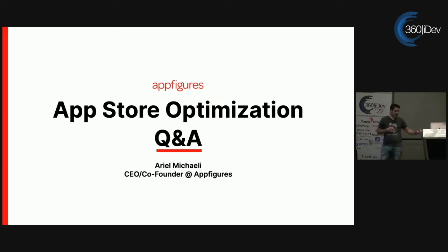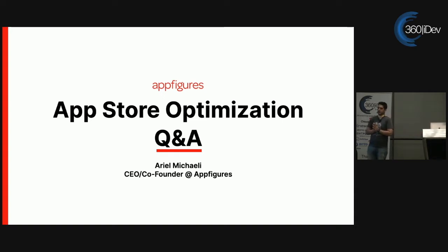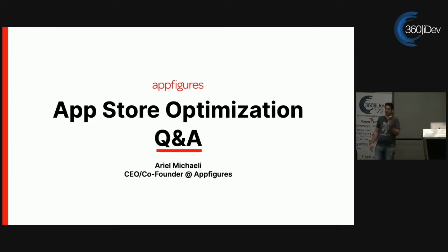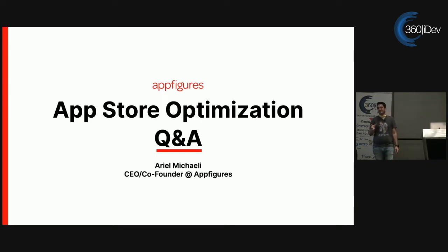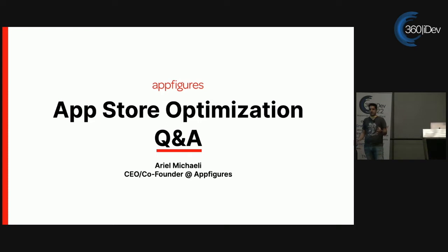For small indie developers who have few users, what should you focus on most for App Store optimization? The answer is actually really simple. There are two and a half things: keywords, ratings performance, and paid ads — which I gave a half because it's only partially good. With App Store optimization, you have keywords and you have performance. Performance is ratings. If you think about the algorithm, it's really nothing more than a bunch of ifs. And if you know what the ifs do, you know how to play the game.